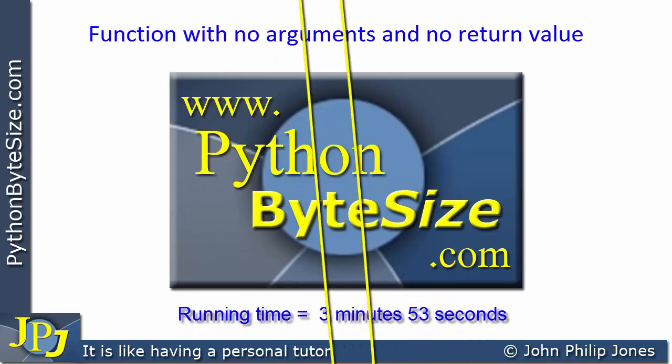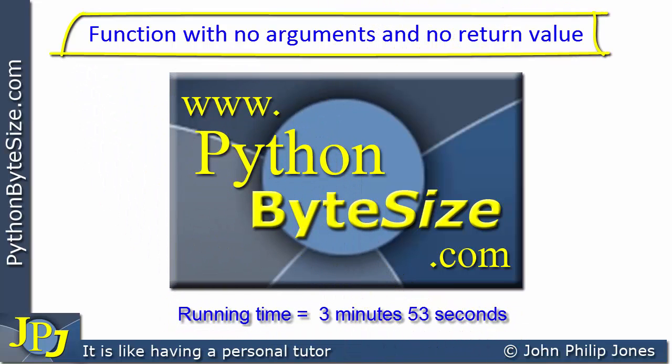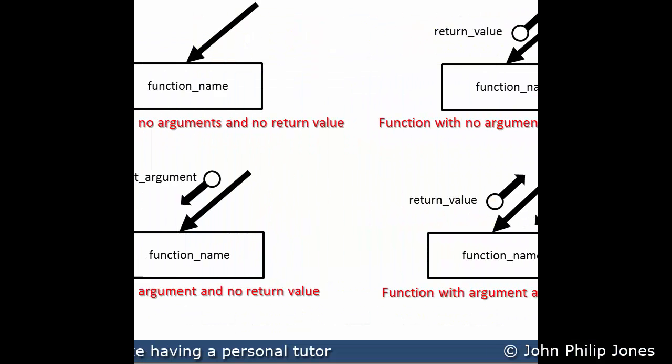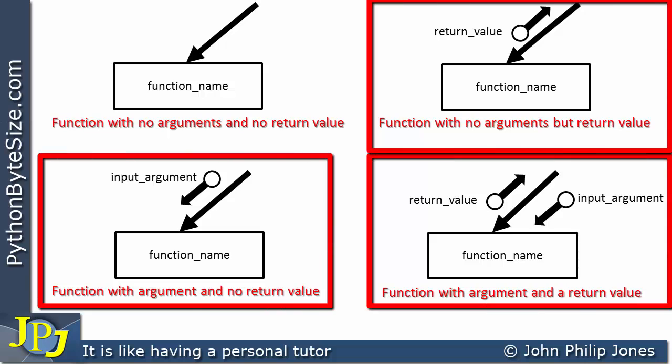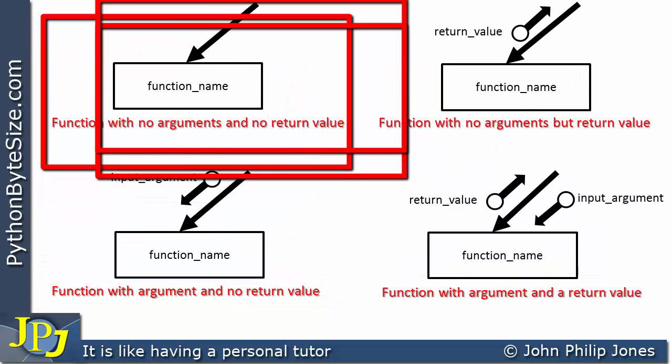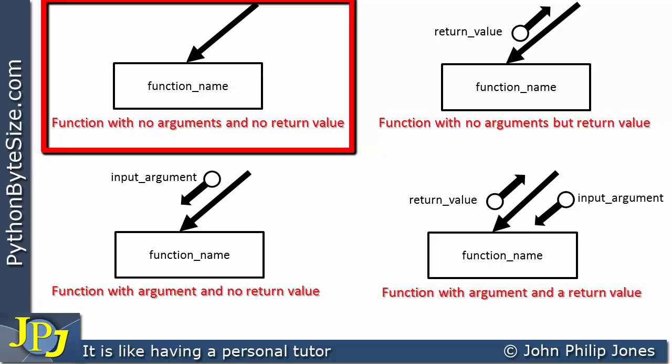In this video, we're going to look at a Python function that has no arguments and actually doesn't return any values either. So far in this playlist, we've looked at functions that have return values, input arguments, and return values after there's been an input argument. What we're going to do in this video is look at a function that's called but has no arguments, i.e. no input parameters, and it doesn't return anything — it just carries out a particular function, whatever that may be.